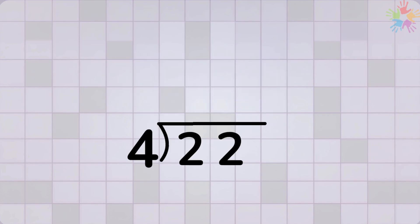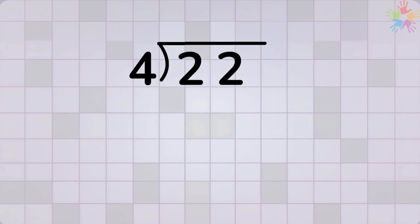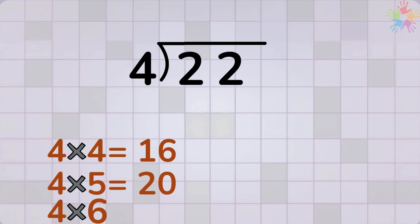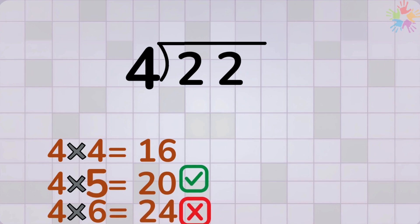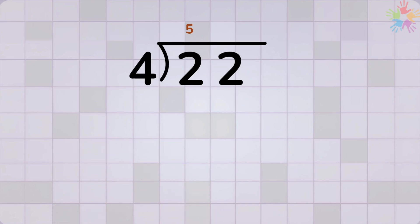Ask, how many times does 4 go into 22? Let's try a few options. 4 times 4 equals 16. 4 times 5 equals 20. 4 times 6 equals 24, but that's too much. So we use 5. We write the number 5 at the top. Because 4 times 5 equals 20. Now subtract. 22 minus 20 equals 2.